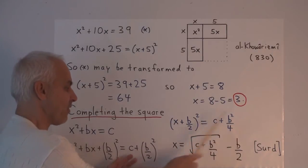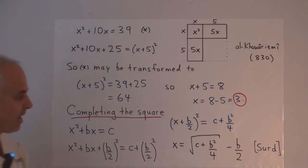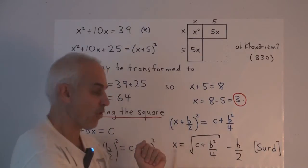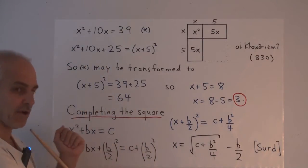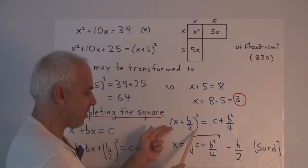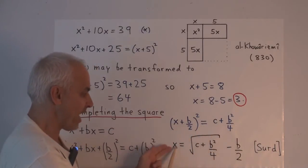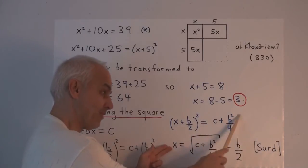And this thing here we can just write as c plus b squared over 4. Now in this form, it's much like this equation here. We take x plus b over 2 squared equals this, so x plus b over 2 will be the square root of this.